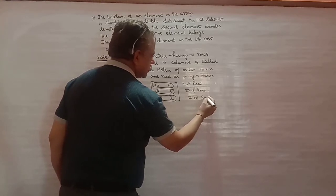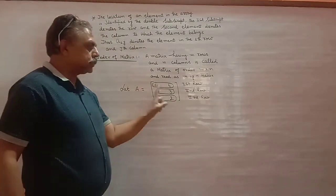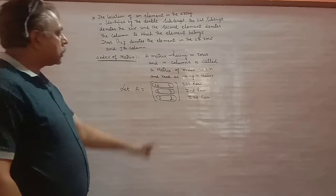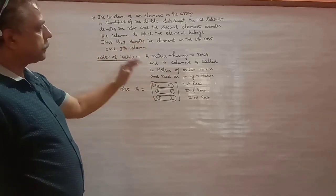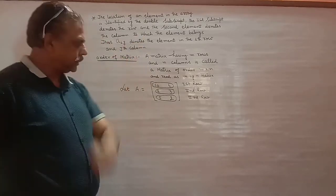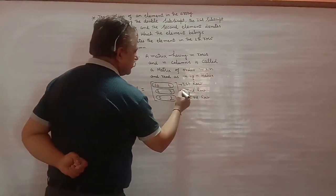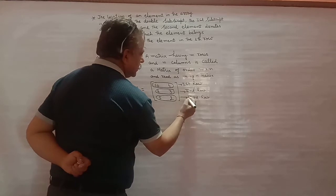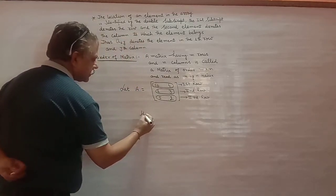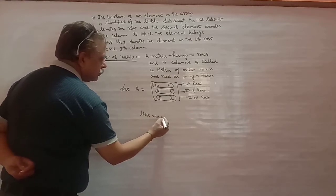तो इसका मतलब यह हुआ कि इस matrix में कितने row हैं? तीन। और matrix में row को हम M से लेते हैं, तो इसका मतलब यहां पर M equal to 3. तो लिख लेंगे: here M is equal to 3.